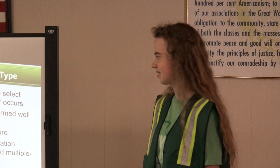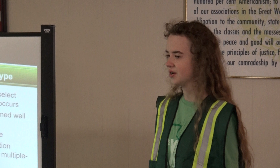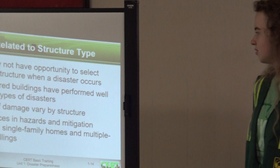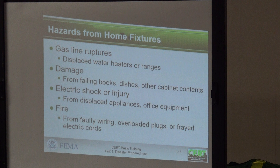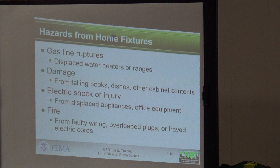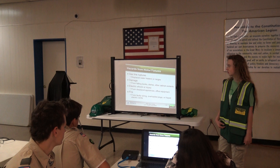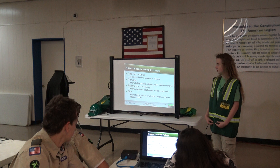You may not have the opportunity to select what type of structure you're in when a disaster occurs. Well-engineered buildings are better suited for disasters than a small shack. Damage varies by structure type between single-family homes and multiple-family units. Home hazards include: gas lines disrupted, displaced water heaters or ranges, damage from falling books or cabinet contents, electric shock from displaced appliances or office equipment, and fire from faulty wiring, overloaded plugs, or frayed electric cords.